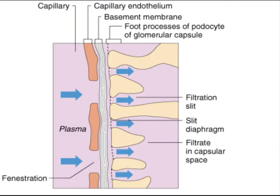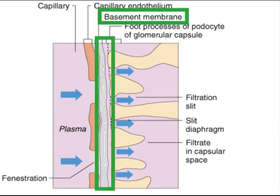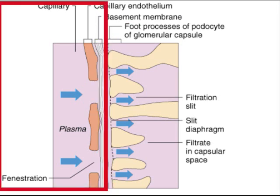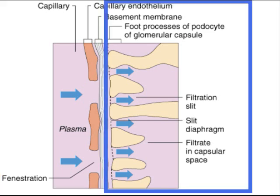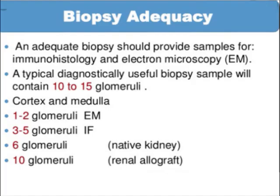This is the filtration membrane. It consists of the basement membrane in the center, outlined in green. On the inside is a fenestrated endothelium — blood passes through these fenestrated endothelial cells. On the outside of the basement membrane are epithelial cells, which have filtration slits.